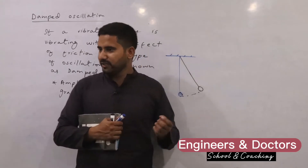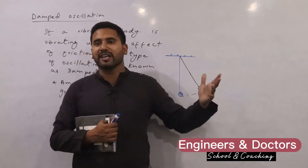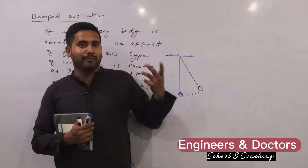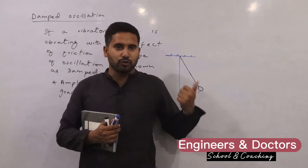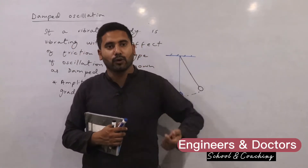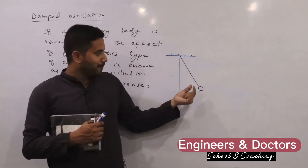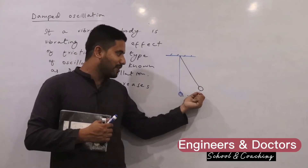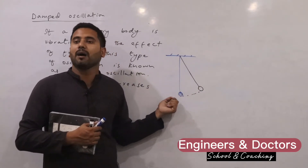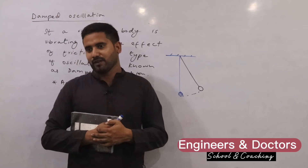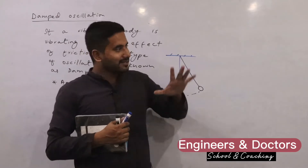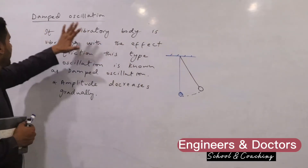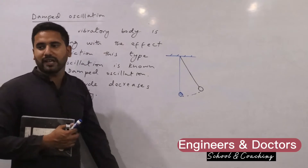If this pendulum is in open air, then air friction will act on it. What you observe is that with the passage of time, its amplitude — its displacement — will be reduced. This type of vibration we will name damped oscillation.